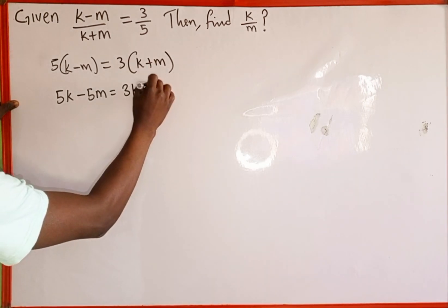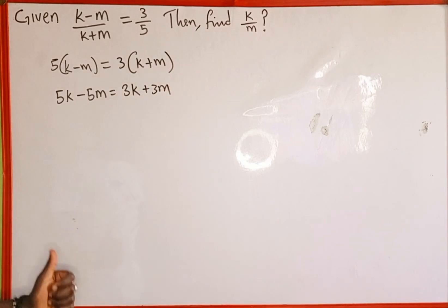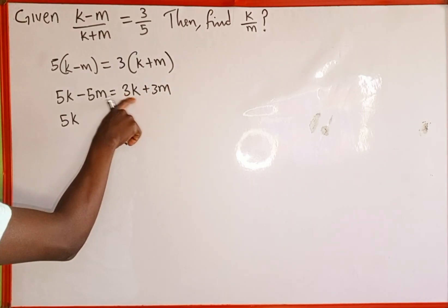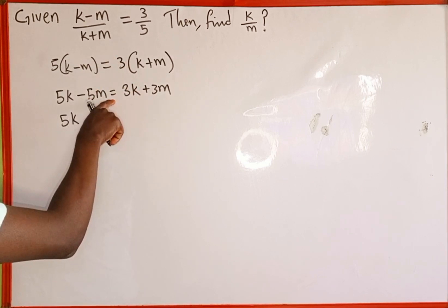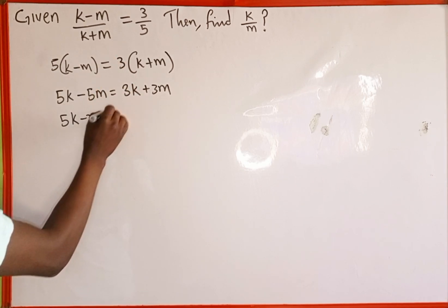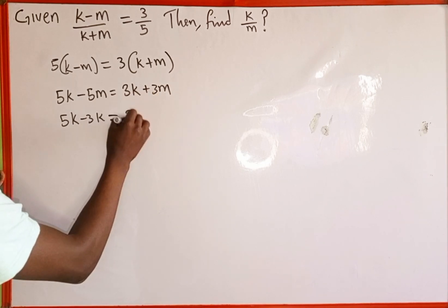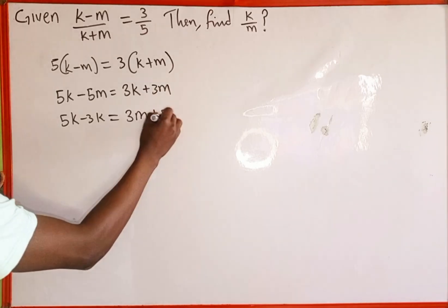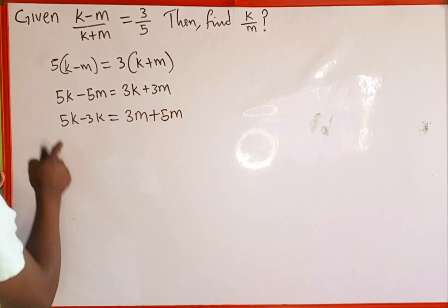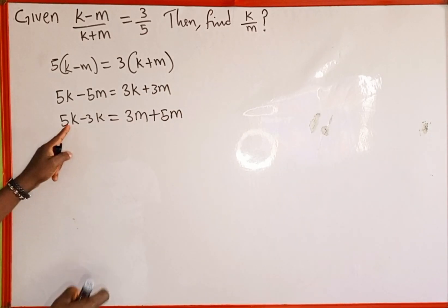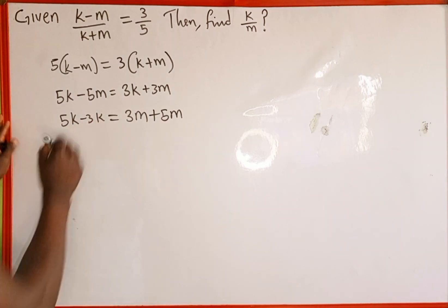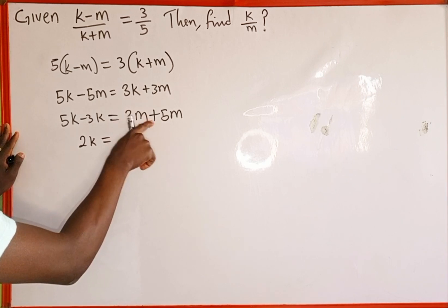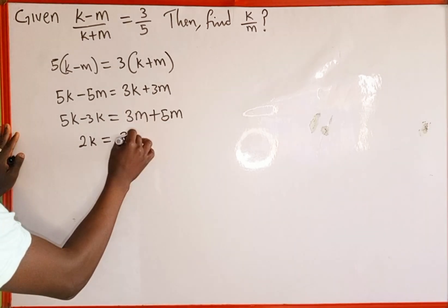Now we are going to combine the like terms. We have 5k here and we have 3k here. When this 3k crosses this equality sign, it is going to be negative. We can add them together because they have the same variable. 5k minus 3k is going to give us 2k, which is equal to 3m plus 5m, giving us 8m.